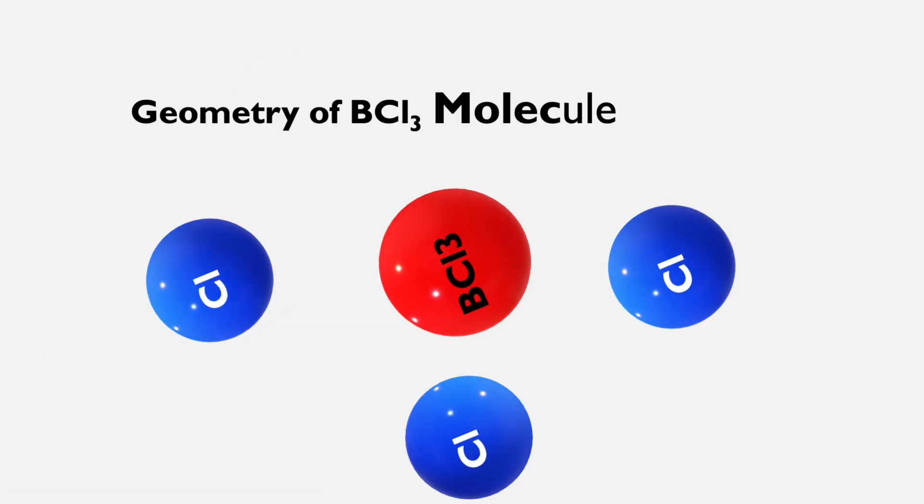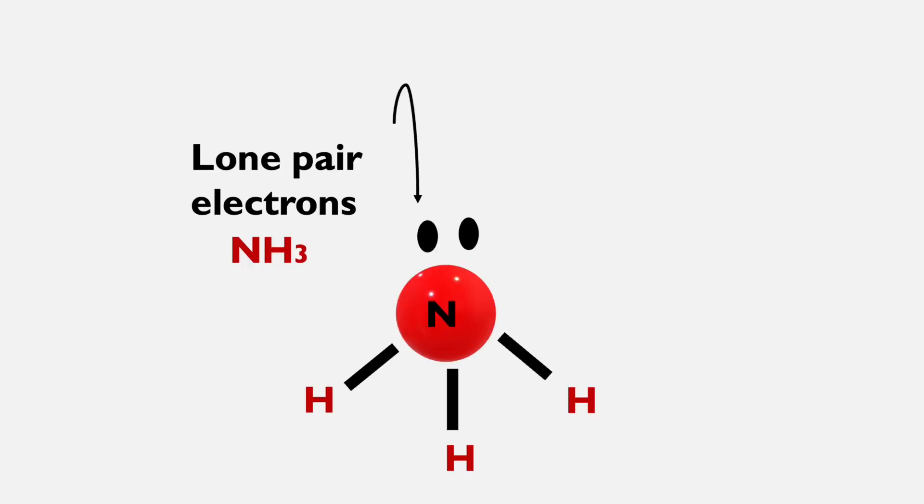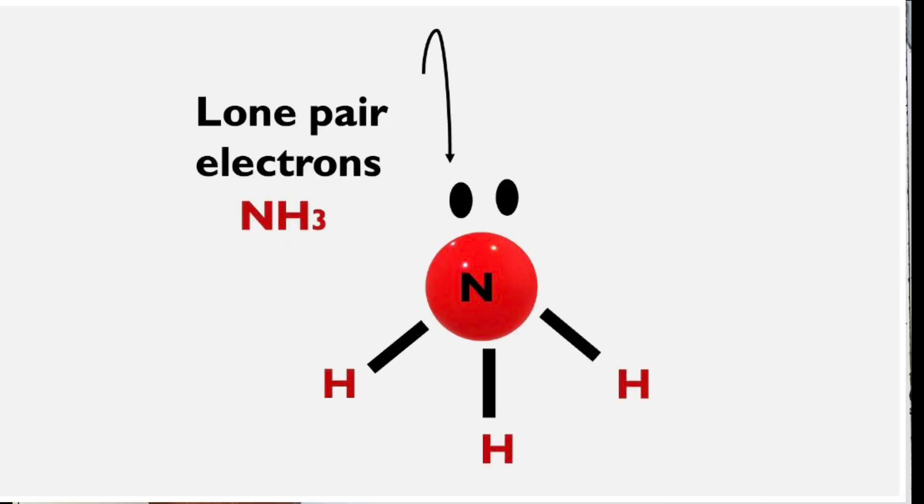To know very clearly about the molecular geometry, first we should know the difference between bond pair electrons and lone pair electrons. Bond pair electrons are electron pairs which are involved in bond formation, but lone pair electrons are electron pairs that do not involve in bond formation but they have the power to change the shape of the molecule.